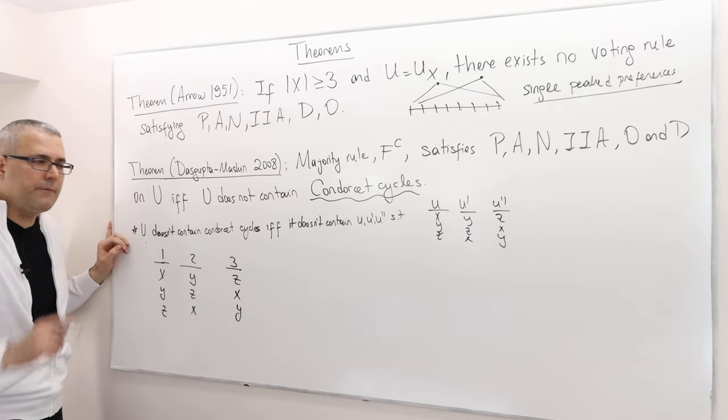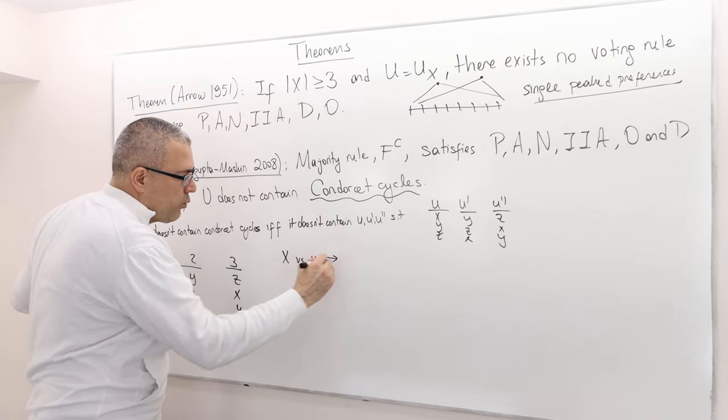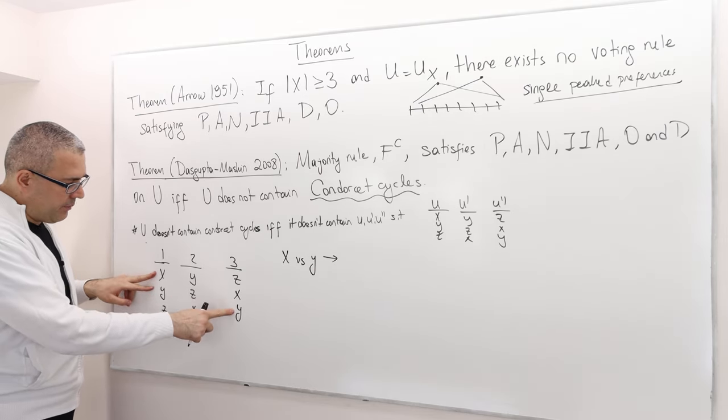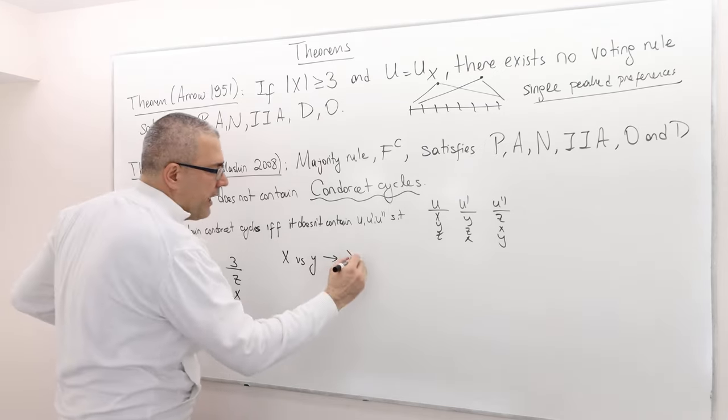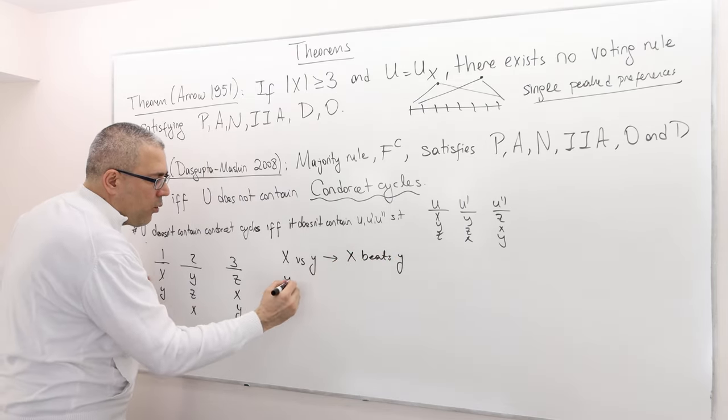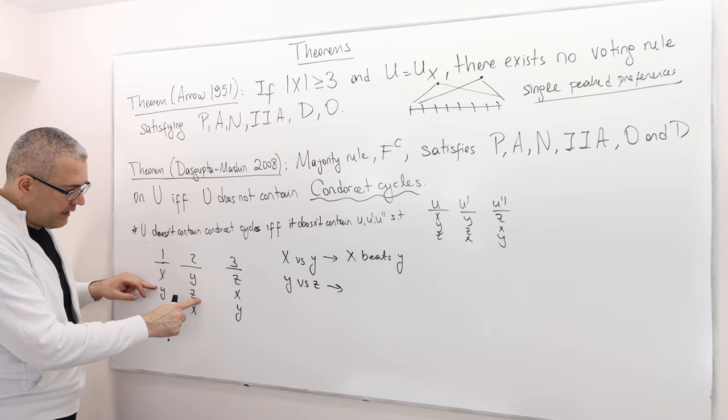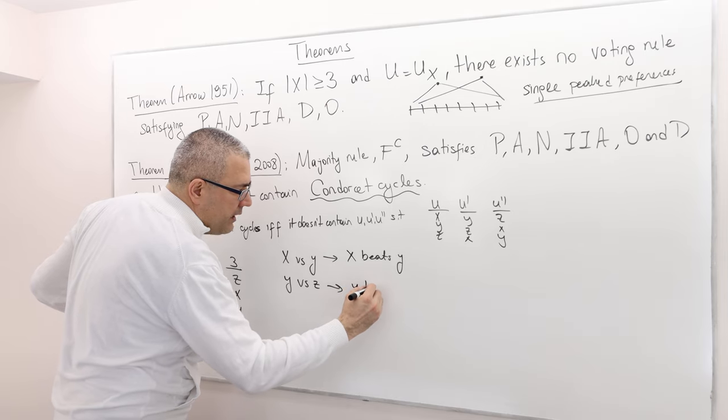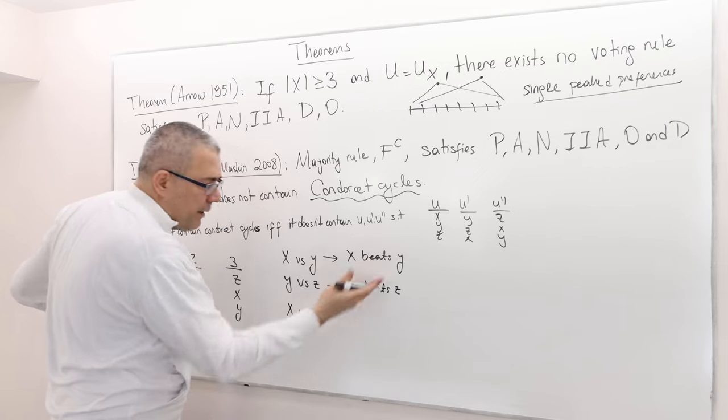Now let's look at x versus y. Which one beats which one? x is better than y, y is better than x, x is better than y. So two voters are going to vote for x over y, therefore x beats y. What about y versus z? y is better than z, y is better than z, so two guys, the majority votes for y, therefore y beats z.